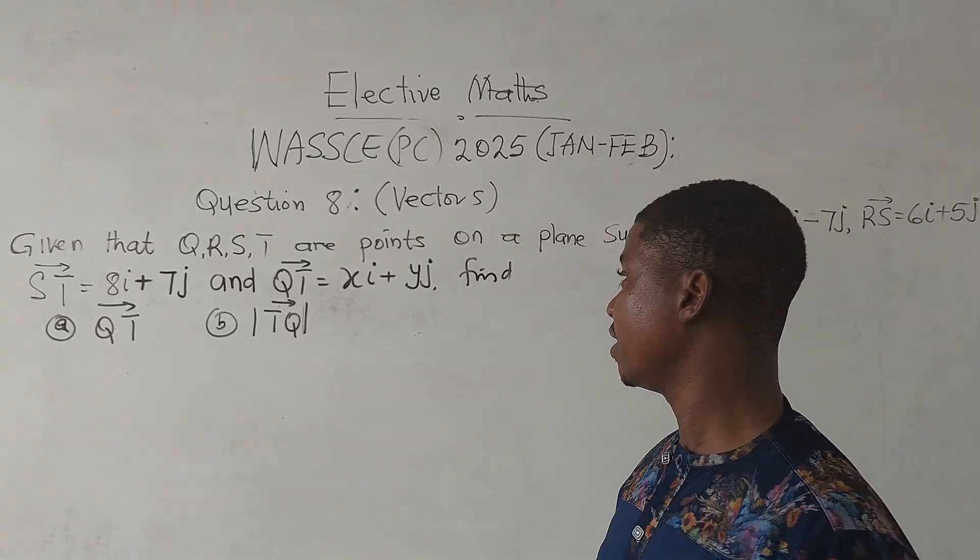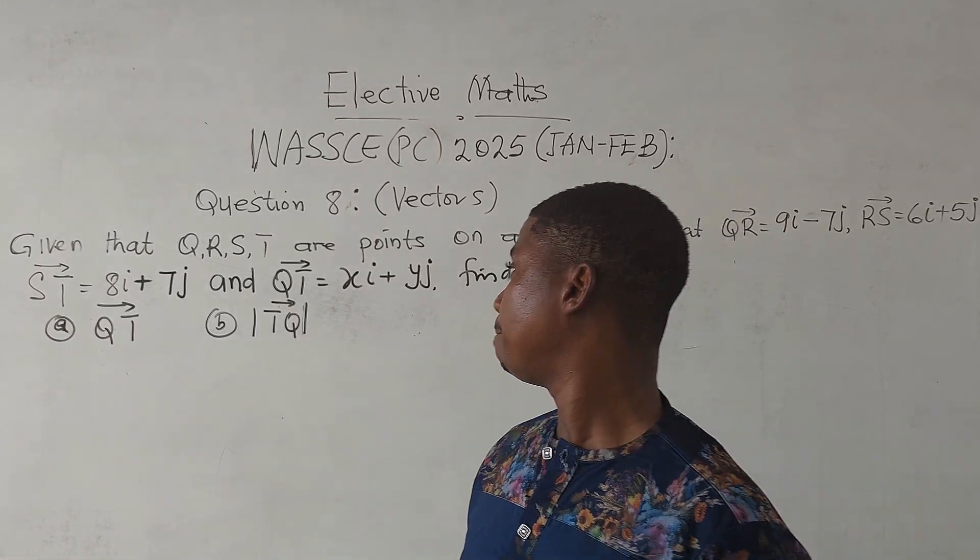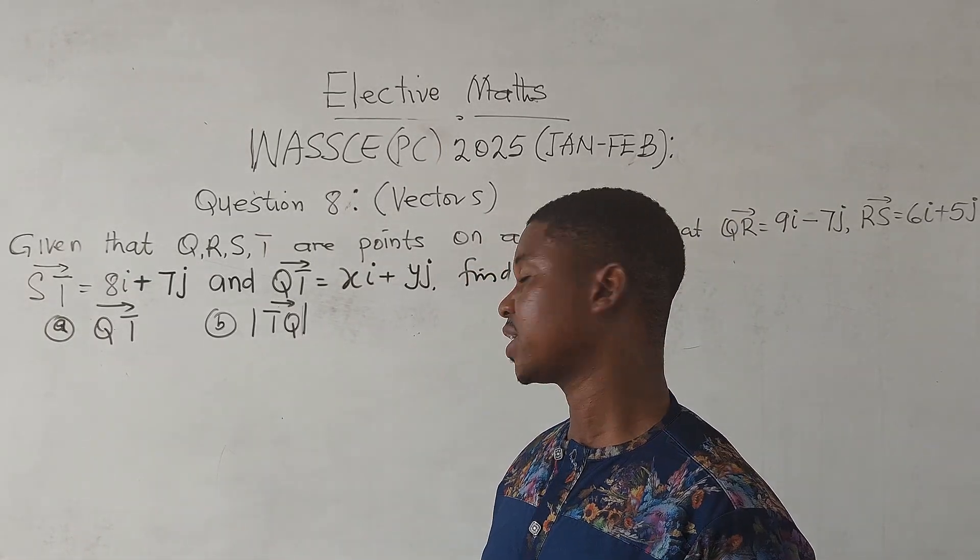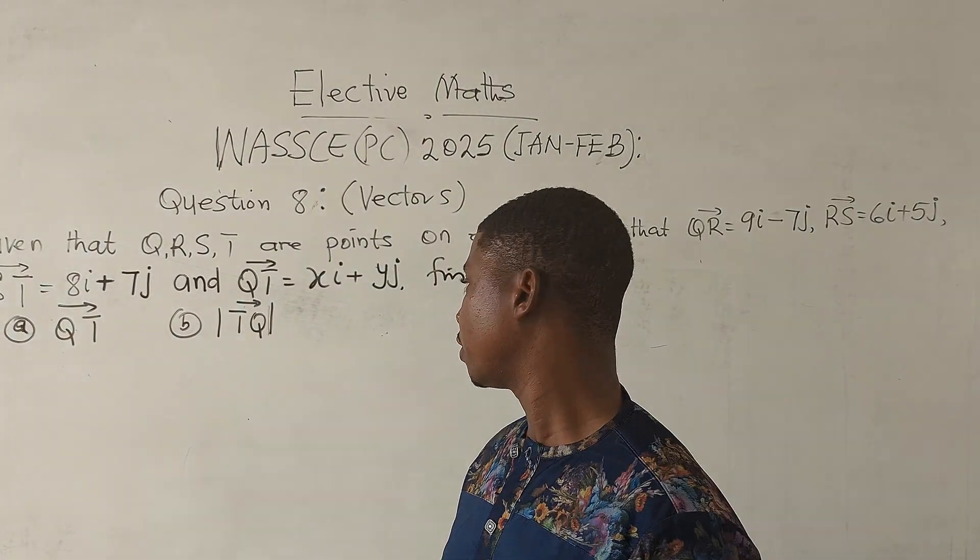Find: (A) vector QT, (B) magnitude of vector TQ. So this is our problem for us to solve.